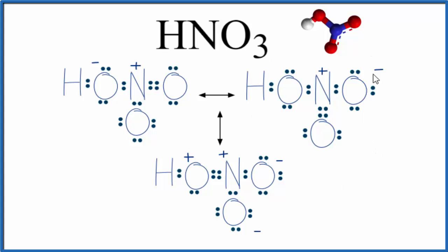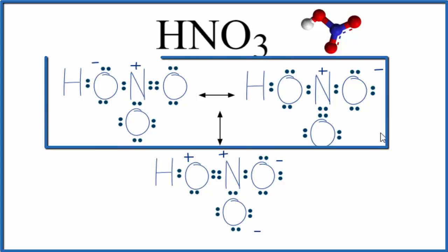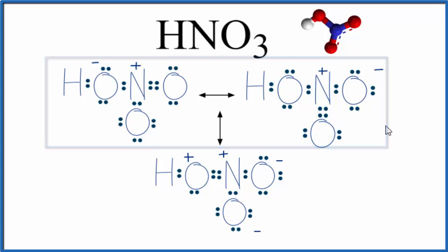So these are our resonance structures, but the top two here, because the formal charges are most favorable or as close to zero as we can get, these are the two major resonance structures for HNO3.